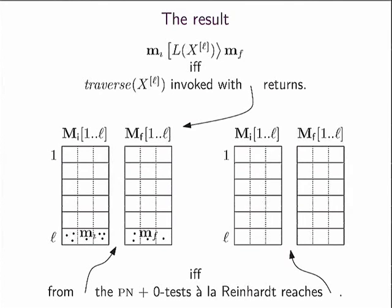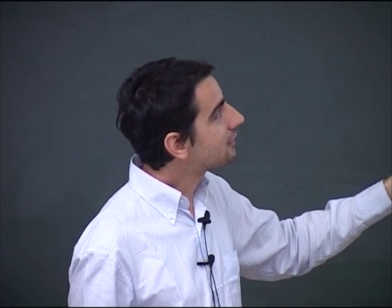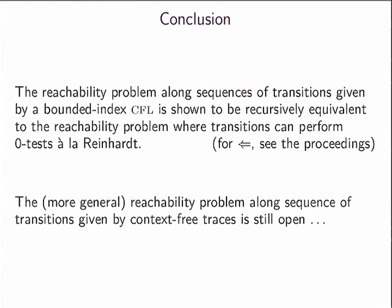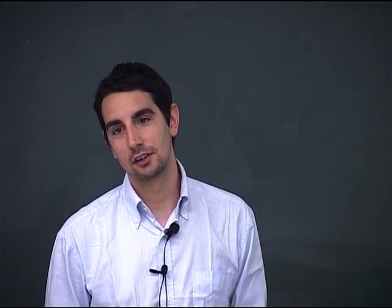This concludes the proof that deciding reachability along bounded-index context-free traces reduces to reachability in Heiner's model — and that's the main result of the paper. We also showed the reverse direction: given Heiner's model, you can set up a bounded-index context-free language such that the reduction goes the other way around. The general problem for full context-free languages remains open, and I think it's a very hard problem. Thank you.